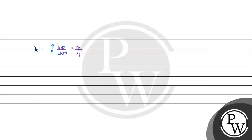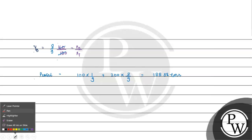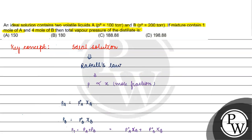Now, the total vapor pressure of the distillate = P⁰A × χA(vapor) + P⁰B × χB(vapor) = 100 × (1/9) + 200 × (8/9) = 188.88 torr. Coming back to the question, the correct answer is option C: 188.88. I hope you understood it. Thank you and all the best.